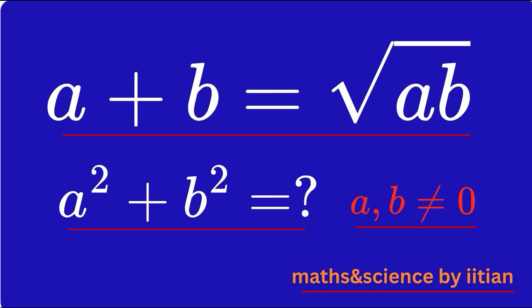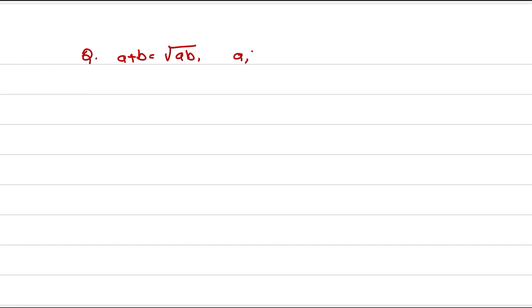It is a very good example. Please pay attention to each and every step and try to understand it. The question given is: a + b = √(ab), where a and b are not equal to 0. Find a² + b².